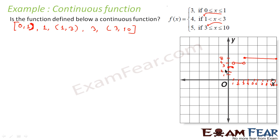Looking at the graph, it is clear this function is discontinuous at x=1 and x=3. We can either divide into the five buckets and solve analytically, or just draw the graph to show that the function is not continuous at x=1 and x=3.